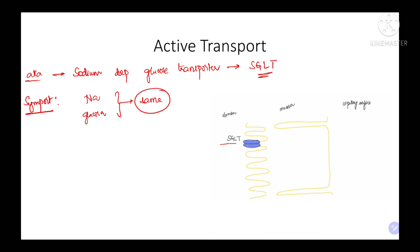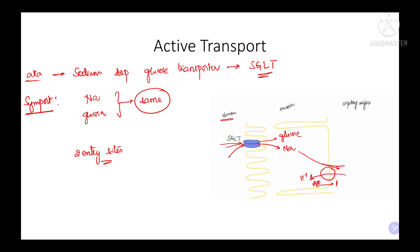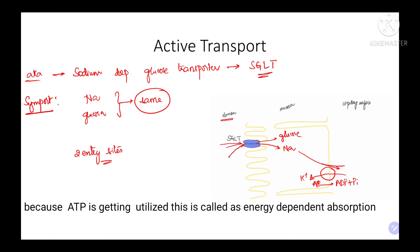SGLT is mainly located on the luminal side of the intestinal cell. It has two entry sites — one for sodium and one for glucose. After entry, the sodium is coupled with the sodium-potassium ATPase. The entered sodium is exited outside in exchange with potassium, along with hydrolysis of ATP. The glucose absorbed into the intestinal mucosa is then transported into the capillary surface with the help of glucose transporters, which are discussed under facilitated diffusion.